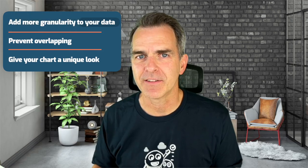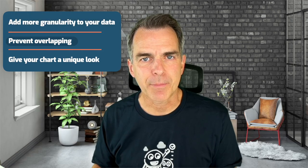How do we build that? To create a jittered bar chart, all we need to do is create a bit of noise around the x-axis and the y-axis. It'll add more granularity to your data, prevent overlapping, and give your chart a unique look. Try it out and I bet you'll impress your colleagues with your new skills.